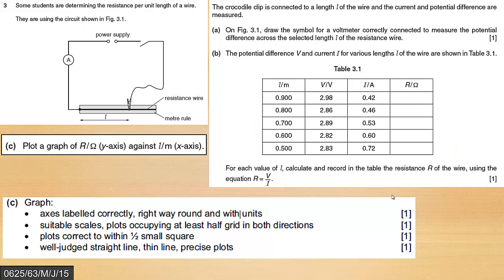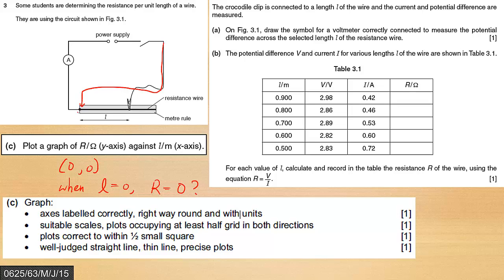However, I said it depends. Although I always talk about exam-oriented skills and tips, I still believe how we do science is also important. The logical thinking behind whether we should join the origin is very simple. When the origin is (0, 0), you need to think about: when your x-value - in this case the length - is 0, whether or not the resistance is also 0. The answer is simple: when the wire has zero length, of course the resistance is 0. So for this question, it's certainly okay to connect the line to the origin.